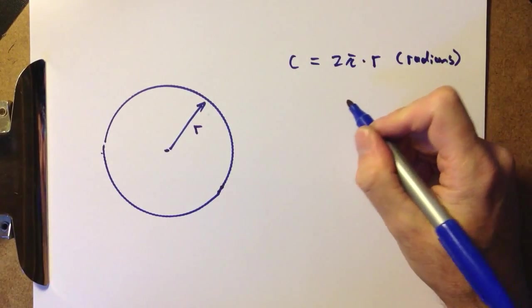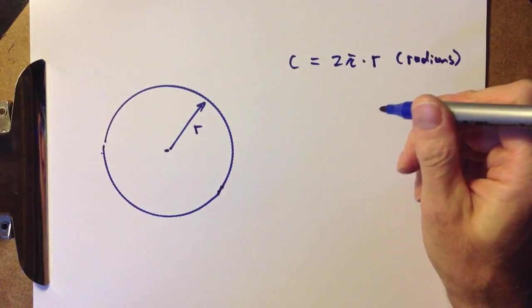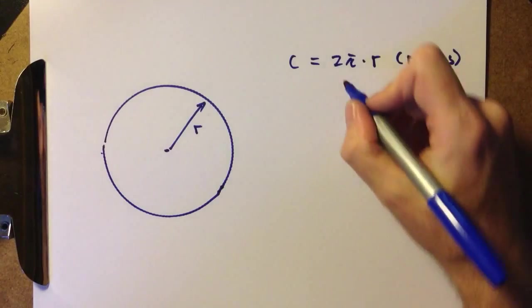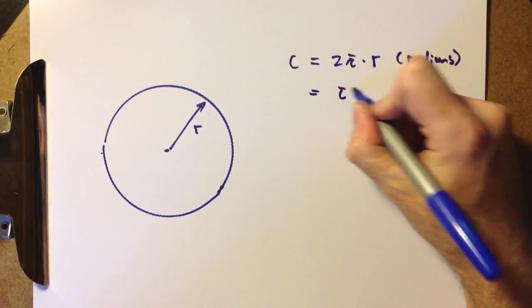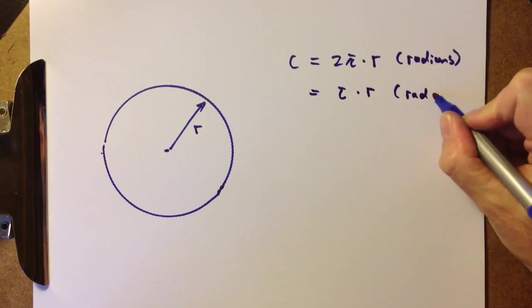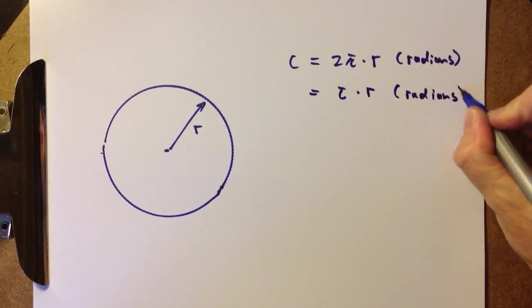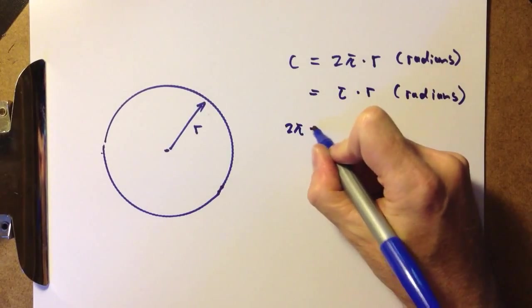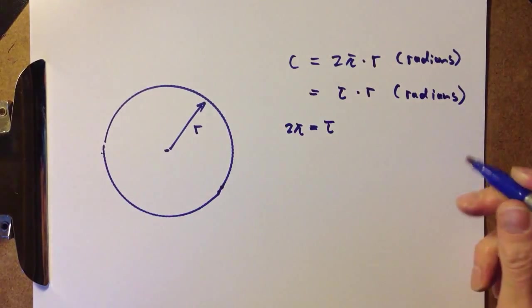Now, going with a few people who make a lot of noise at the moment, even introduced a tau day in June, we can also call this τ times r. Again, express the circumference of the unit circle in terms of radians. You can see τ is no different than 2π.